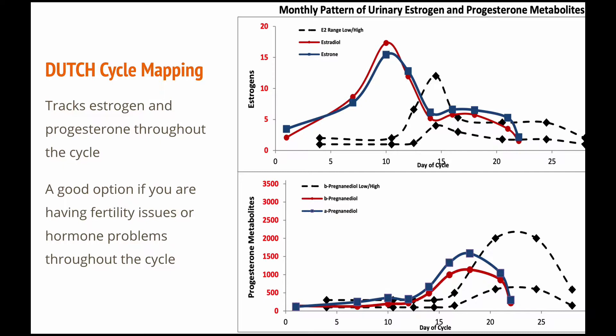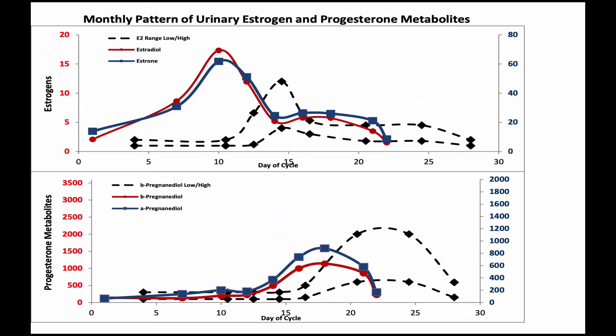For women, they can also get an add-on to the Dutch Complete test — this is known as the Dutch cycle mapping. This measures the hormones by doing a test every day of the cycle, and then we track how the estrogen and progesterone change throughout the cycle. This is important if you're having trouble with hormonal issues at different times throughout the cycle, or if you're having problems with fertility and you're not sure when you're ovulating or if the hormones are too low. In this case here, it looks like this woman is ovulating, but just much earlier in the cycle than normal. It doesn't mean she can't fall pregnant, but they just have to get the timing right. We can also see the comparison of estrogens to progesterone — after ovulation, progesterone rises, just earlier in the cycle than normal.